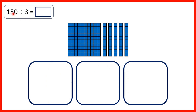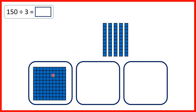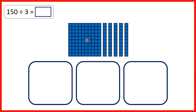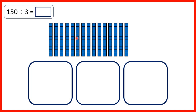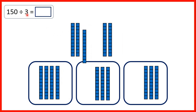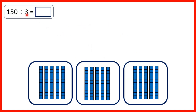Then we had 150, so that's 1 hundred and 5 tens. But we can't share out our 100 block, because when we divide we need to make equal groups. Instead, what we can do is exchange our 100 for 10 tens, and that gives us 15 tens to share out. We're sharing into 3 groups because we're dividing by 3, and we get 5 tens in each group, so our answer is 50.